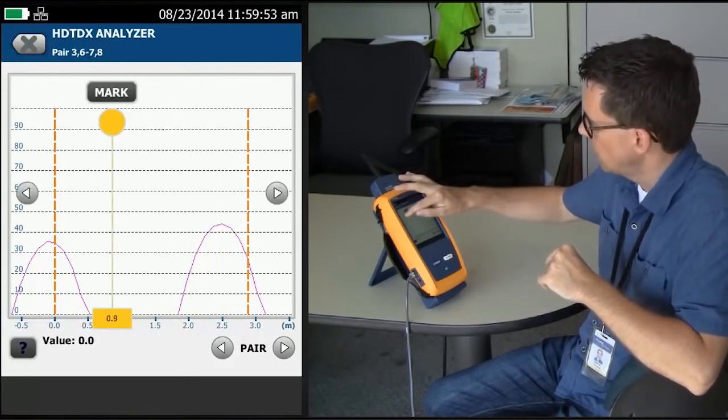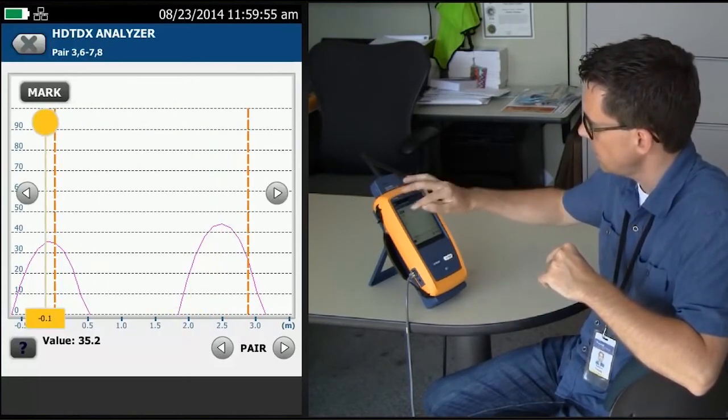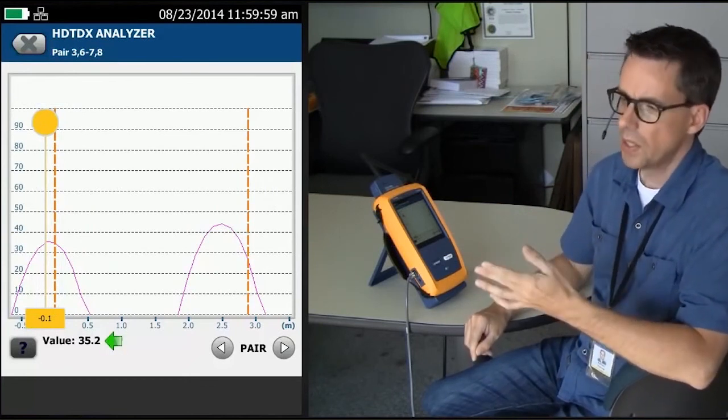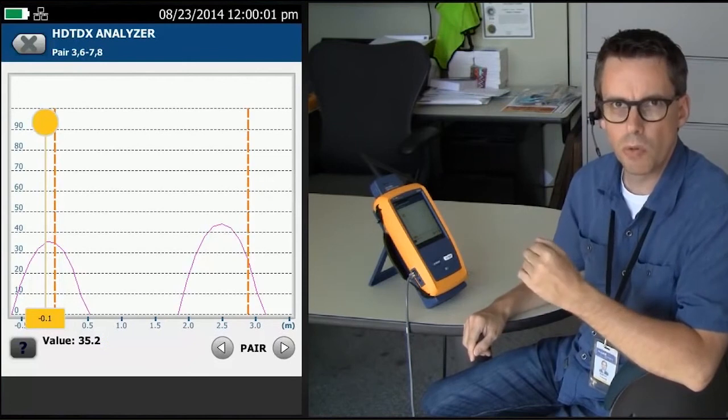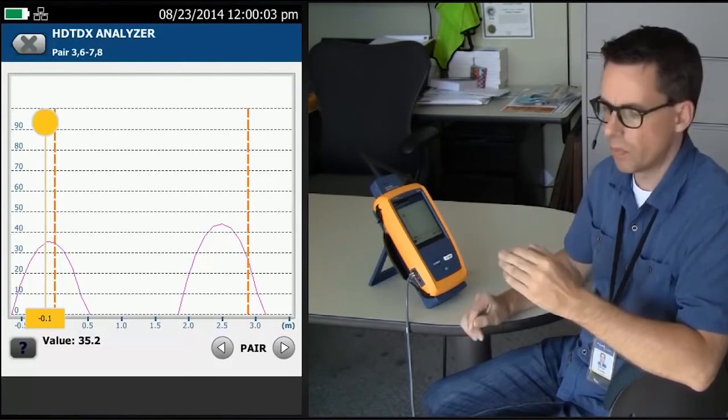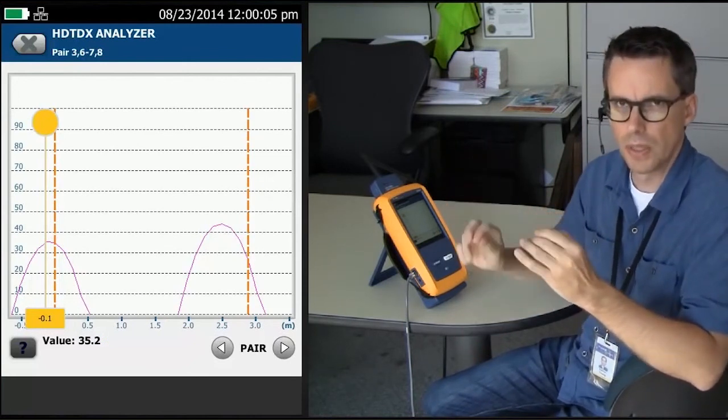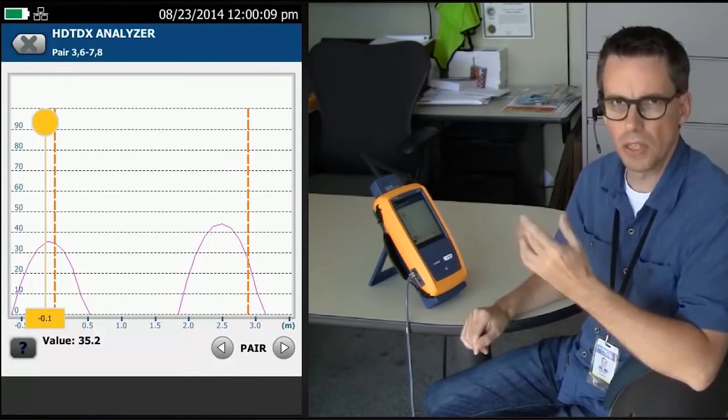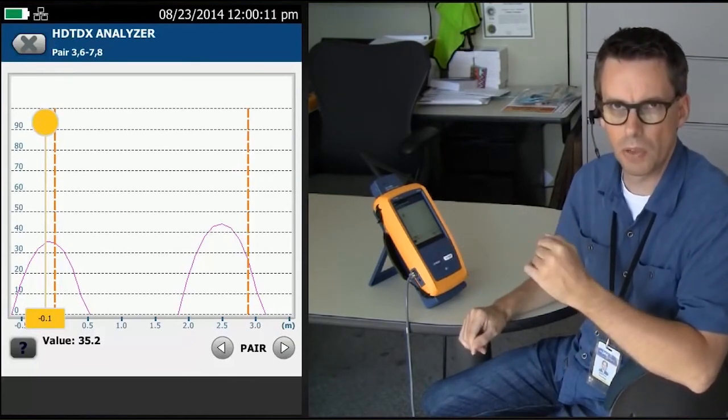When I look at my connection at the near end here, I see a value of 35%. Again, if the link was longer, you could probably get away with 35%. But when the link gets shorter and shorter, you really do need to hit that 30% on the HD TDX in order to get that pass on that near end crosstalk.